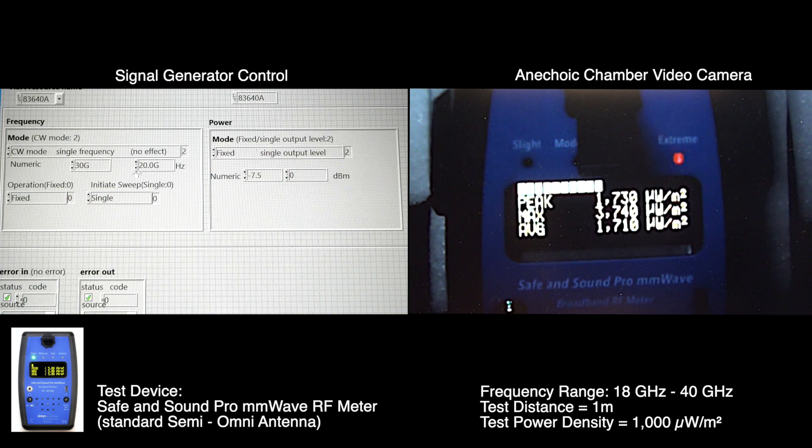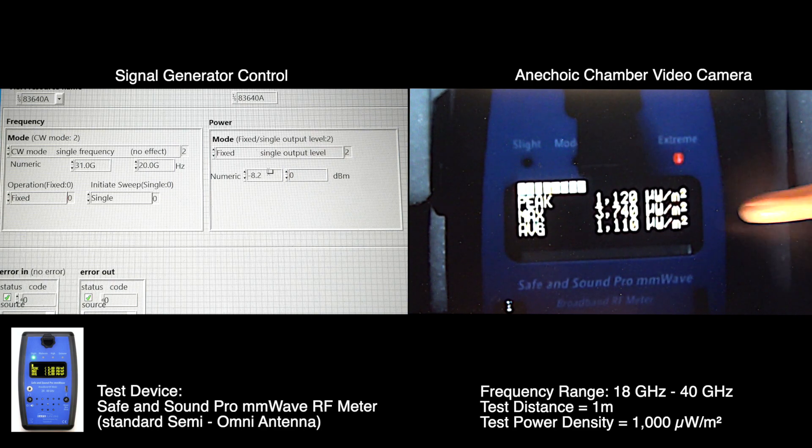30 gigahertz. Minus 7.4 dBm. Minus 8.5 dBm. Minus 8.5 dBm per square meter.